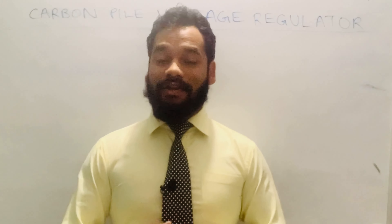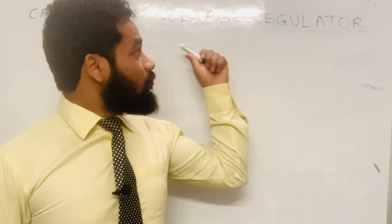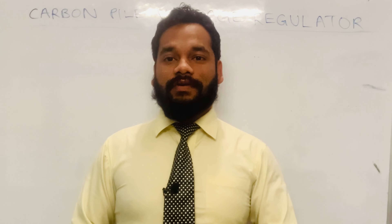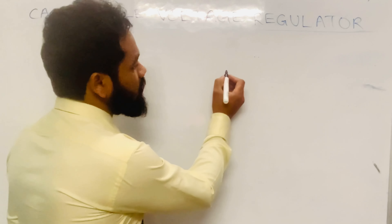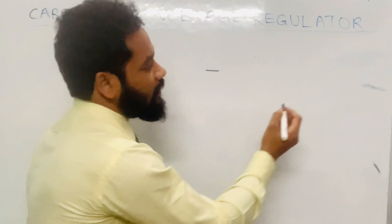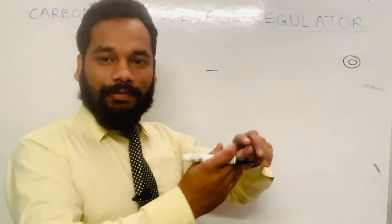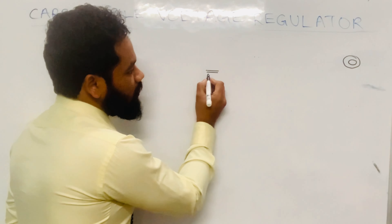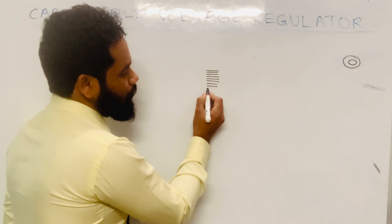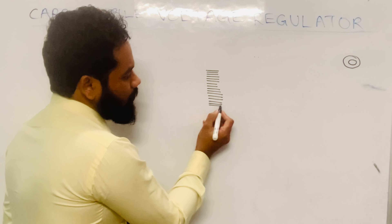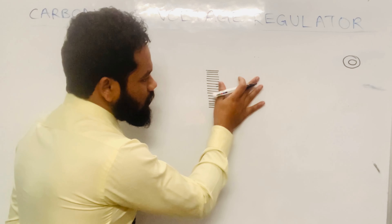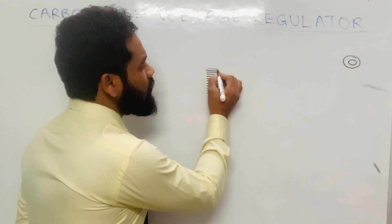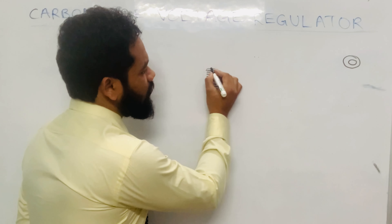As the name says 'carbon pile,' in this voltage regulator we have a carbon pile. A carbon pile is basically a pile made of small carbon discs. Likewise, so many discs will be there and they will be piled up to form a pile - hence called the carbon pile. At the terminals there will be some carbon inserts having silver contacts.